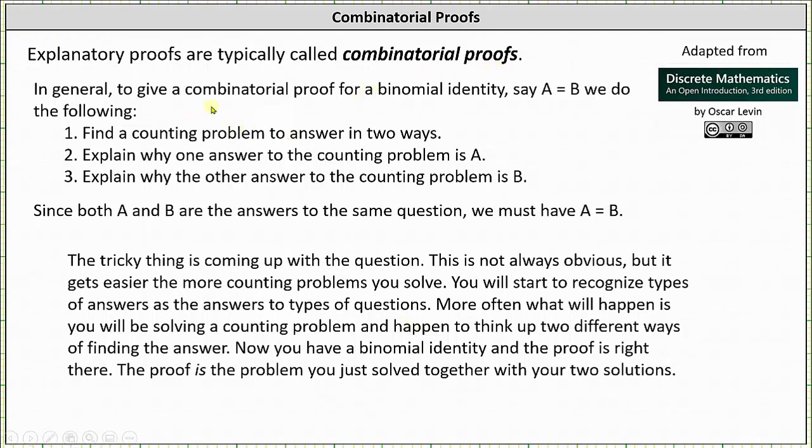In general, to give a combinatorial proof for a binomial identity say a equals b, we do the following: First, find a counting problem to answer in two ways. Second, explain why one answer to the counting problem is a. Third, explain why the other answer to the counting problem is b. Since both a and b are answers to the same question, we have a equals b.